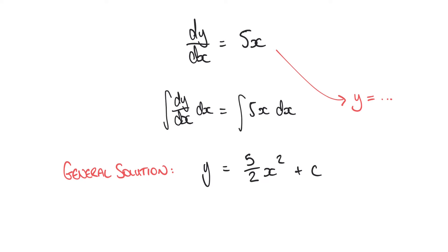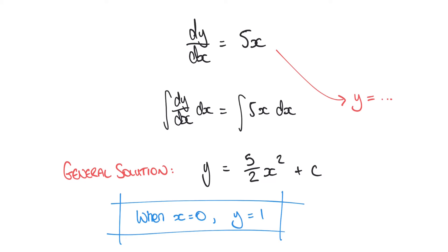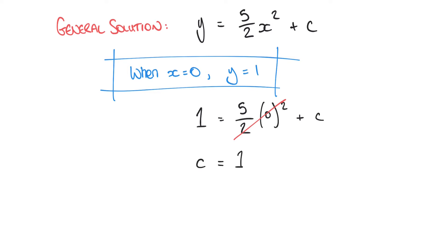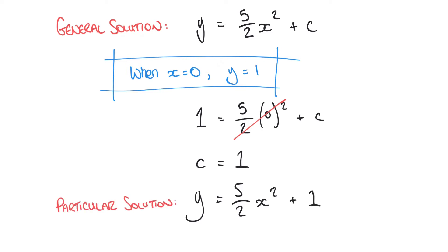But let's suppose we're told something else — that when x equals 0, y equals 1. If that's the case we can substitute our values for x and y into our equation to find the value of c, and in this case we find that c equals 1. So we can rewrite our solution as y equals 5/2 x squared plus 1. This is what we call the particular solution, and notice we've needed a little bit more information to find it compared to the general solution.